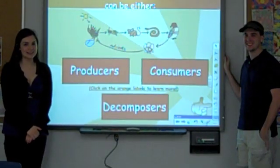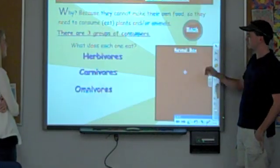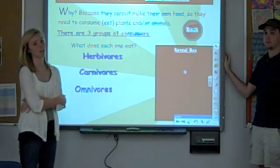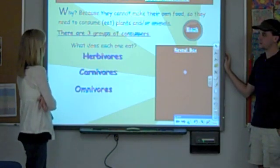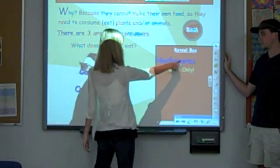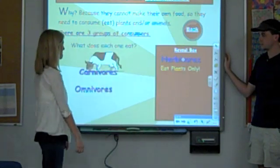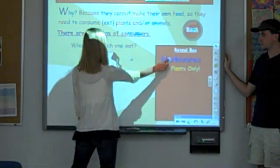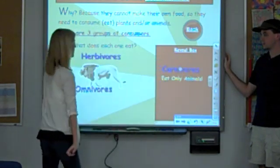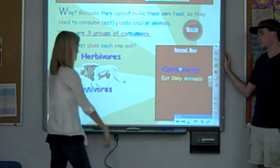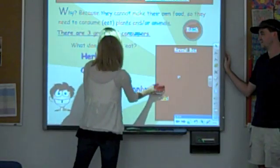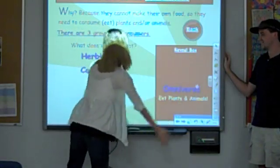Now Miss Brittany will tell us about consumers. Animals are called consumers because they cannot make their own food, so they need to consume or eat plants and/or animals. There are three groups of consumers: herbivores eat plants only, carnivores eat animals only, and omnivores eat plants and animals.